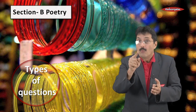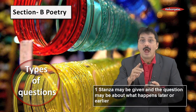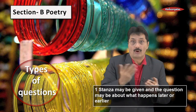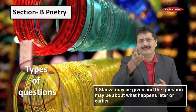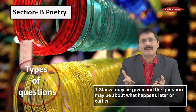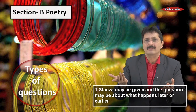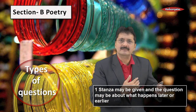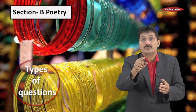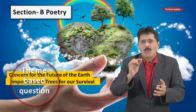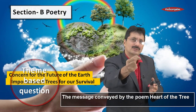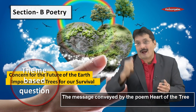Let's look at Section B — the Poetry section. One stanza may be given and the question may be about what happens later or earlier. For example, in Bangle Sellers, you could have a question: which bangles have been mentioned in a later stanza? The questions may also be theme-based — for example, what is the message the poet is trying to convey in 'The Heart of the Tree'?